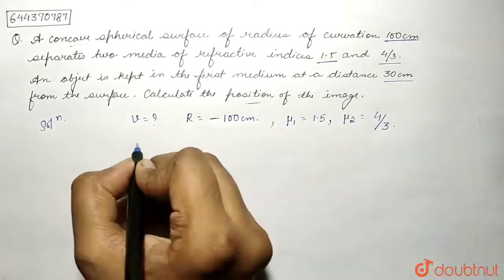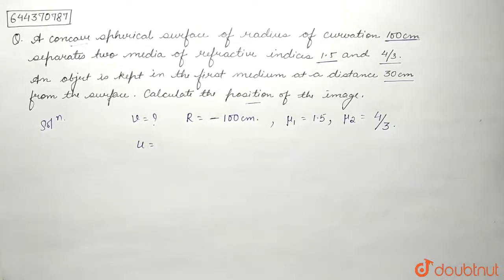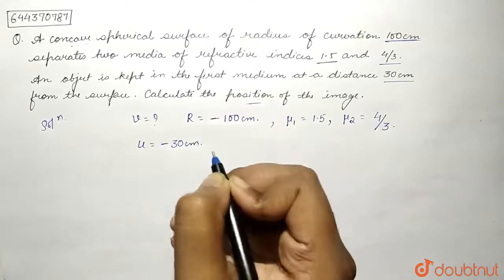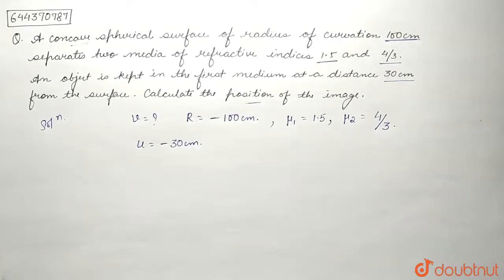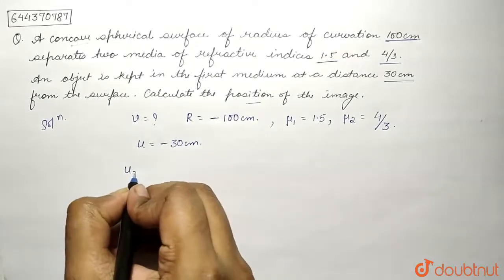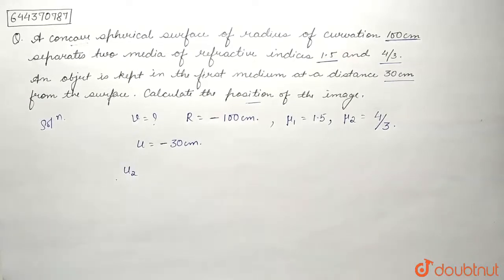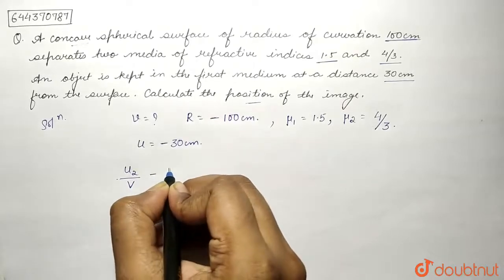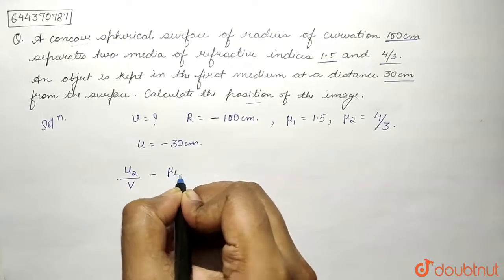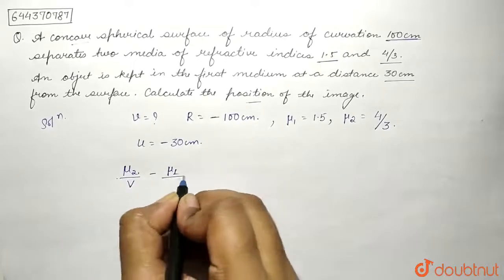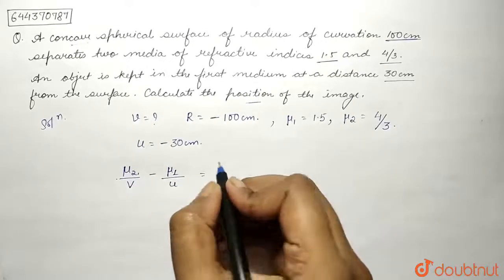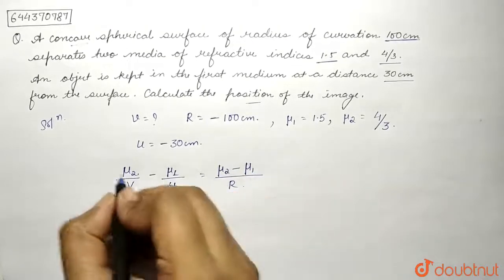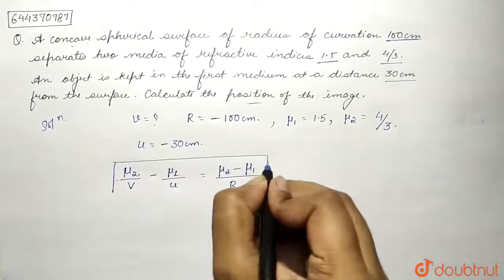And u for concave spherical surface will be negative and equals -30 centimeters. Now we will use the formula for spherical surface which is μ₂/v - μ₁/u = (μ₂ - μ₁)/R. This is the formula we are going to use.